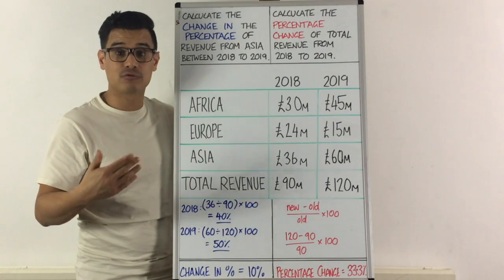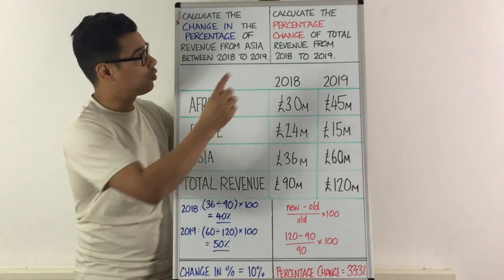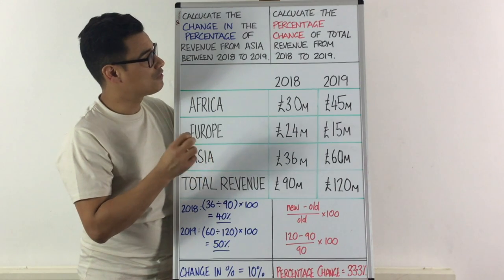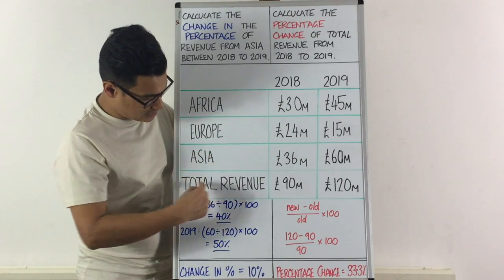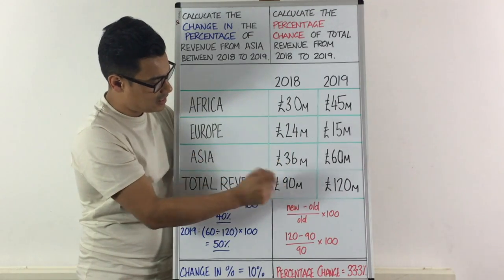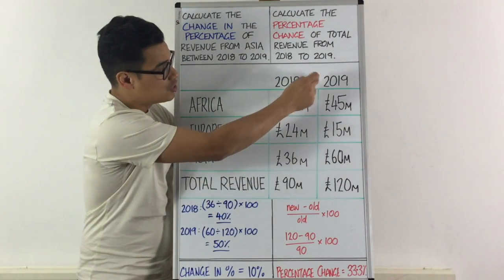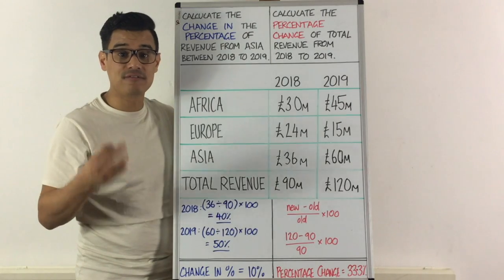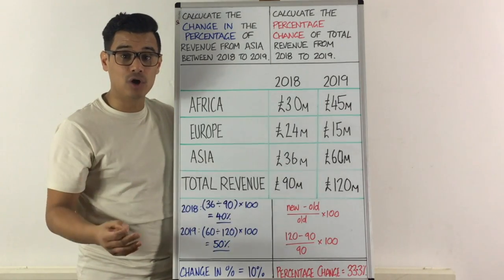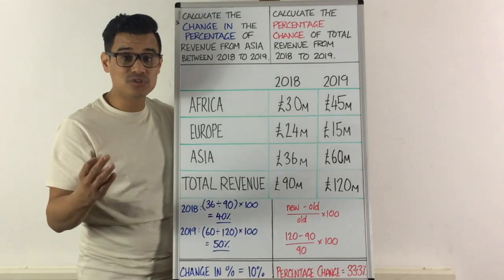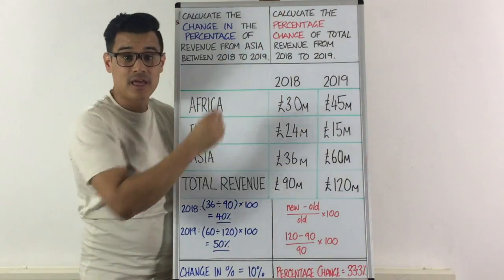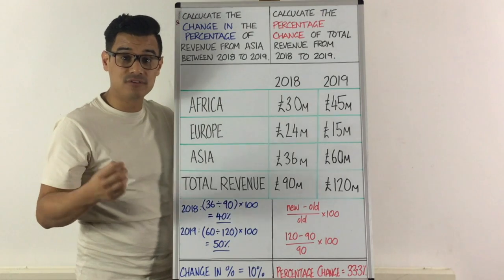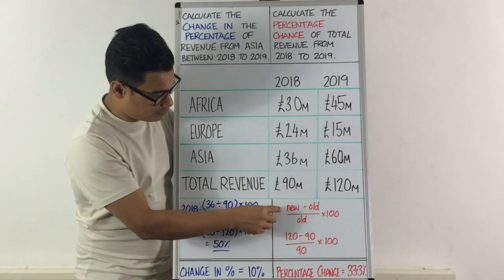That is different from percentage change. Percentage change is asking for a different type of answer. So calculate the percentage change of the total revenue from 2018 to 2019. The total revenue is in this column here, and we can see in 2018 it is 90 million pounds, and in 2019 it is 120 million pounds. When you do percentage changes, the thing to remember is: new minus old, divided by old, times by 100. For more details on that, click on the icon just up there for a full explanation of percentage changes. But remember: new number minus old number, divided by old number, times by 100.